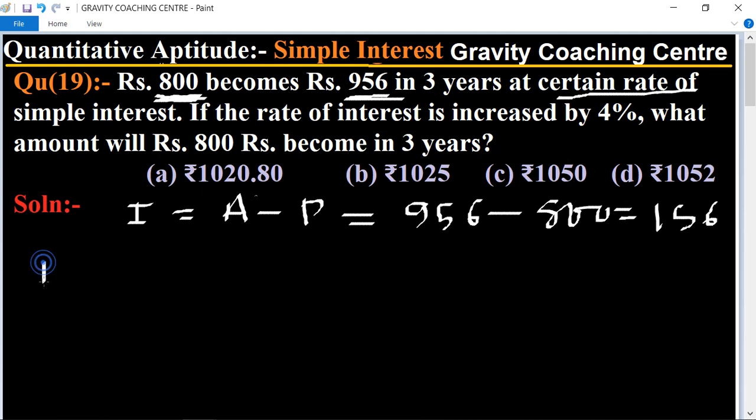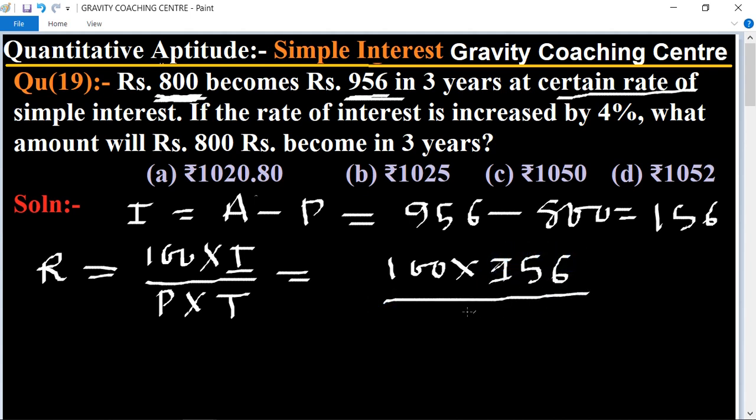So its rate, the formula equal to 100 multiply interest upon principal into time, equal to 100 multiplied interest equal to 156 upon 800 into 3. 8 times cancel and table of 3, 5.